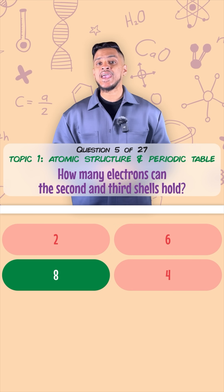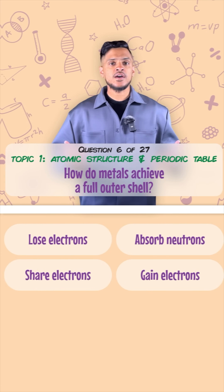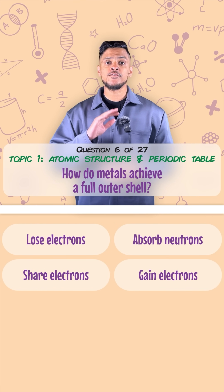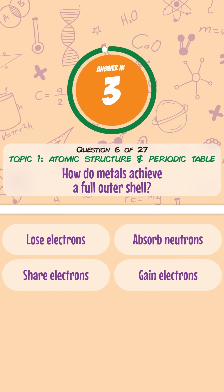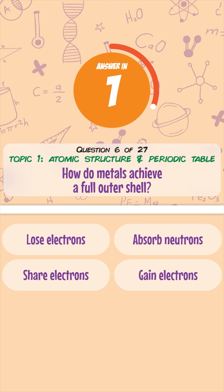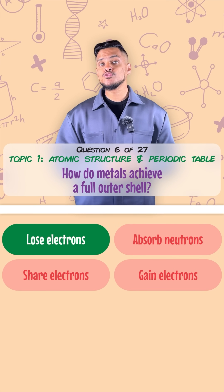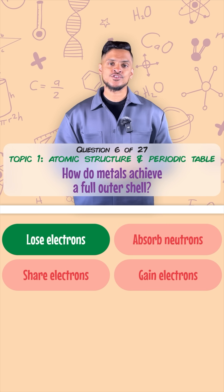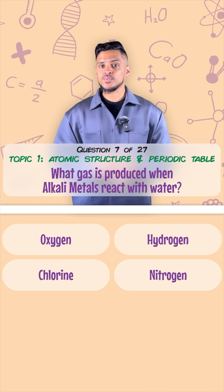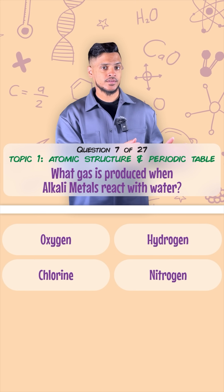How many electrons can the second and third electron shell hold? They both hold eight electrons. How do metals achieve a full outer shell? They need to lose electrons to do that.